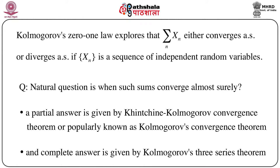Now we are going to talk about Kolmogorov's convergence theorem. As we know, Kolmogorov's 0-1 law tells us that the summation of x_n either converges almost surely or diverges almost surely, provided x_n is a sequence of independent random variables. So it ensures that either the series converges or diverges, but the question is: when can we say that such sums converge almost surely?